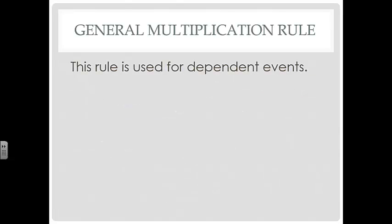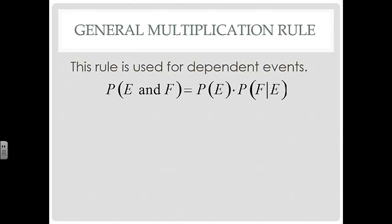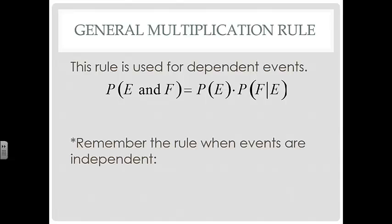The general multiplication rule is used for dependent events. Remember we had a multiplication rule that was used for independent events. Well, now when we have dependent events, we have P of E and F is equal to P of E times P of F given E. This is for dependent events. Remember, the rule when events are independent is just the product of the two probabilities.